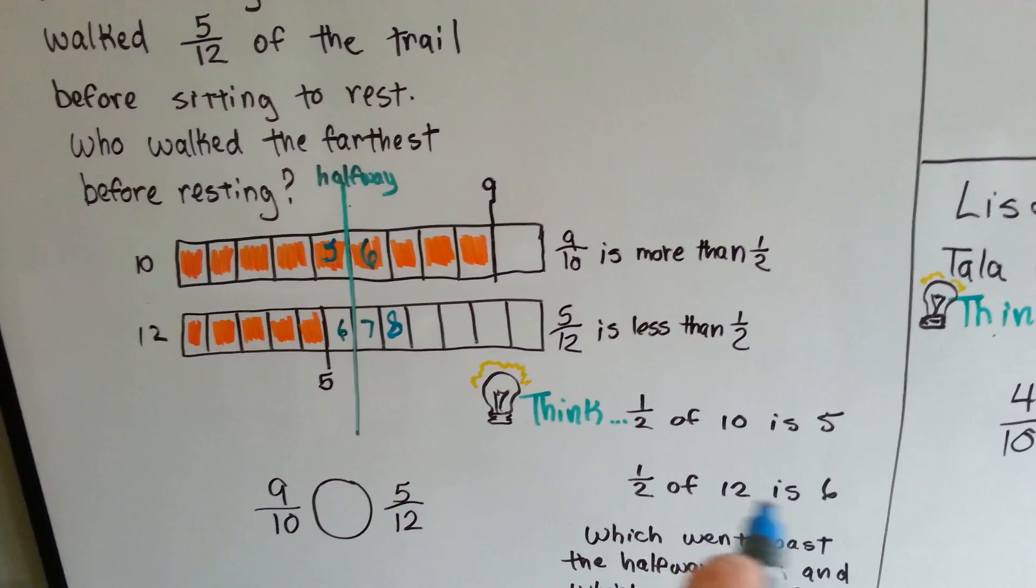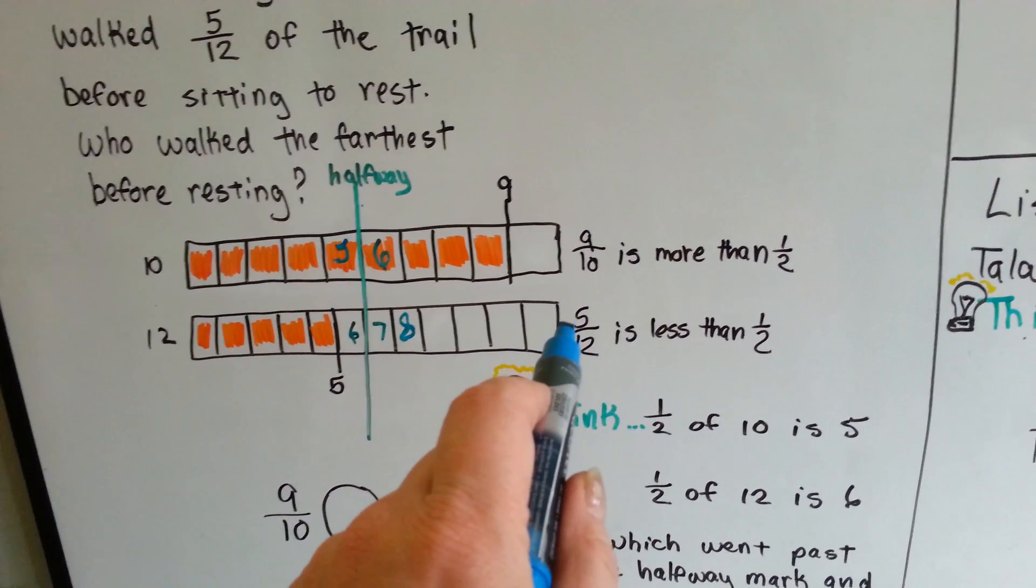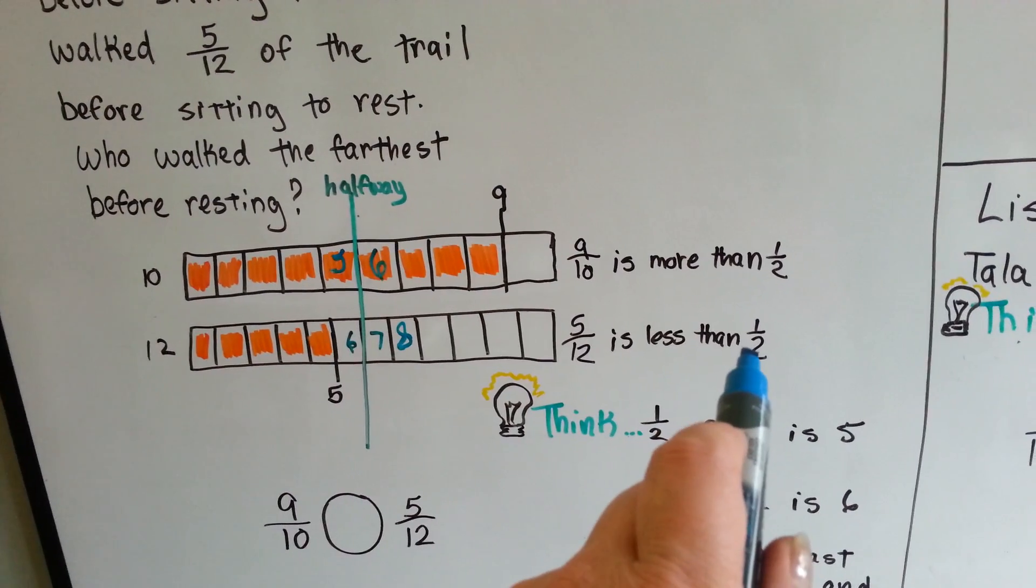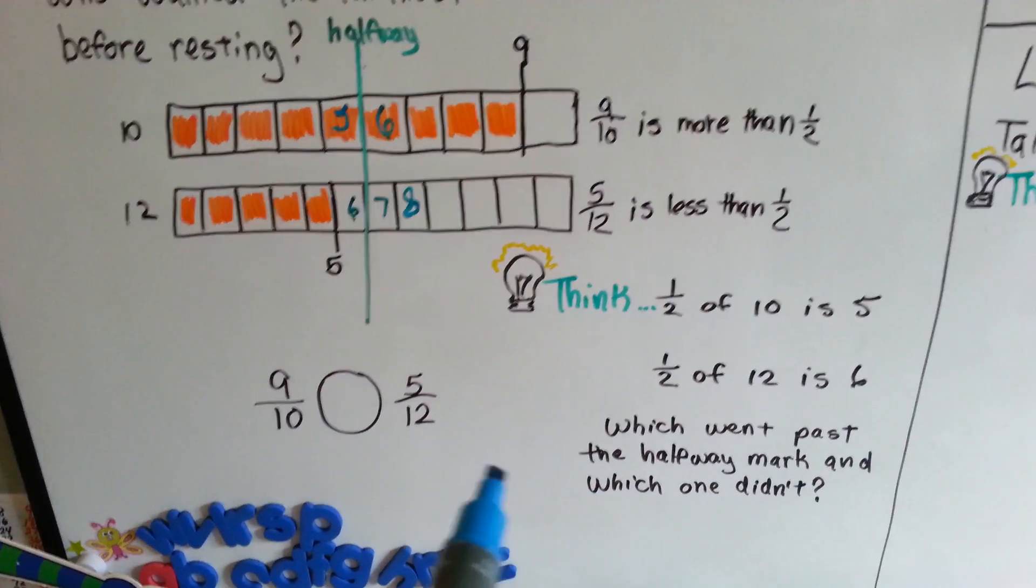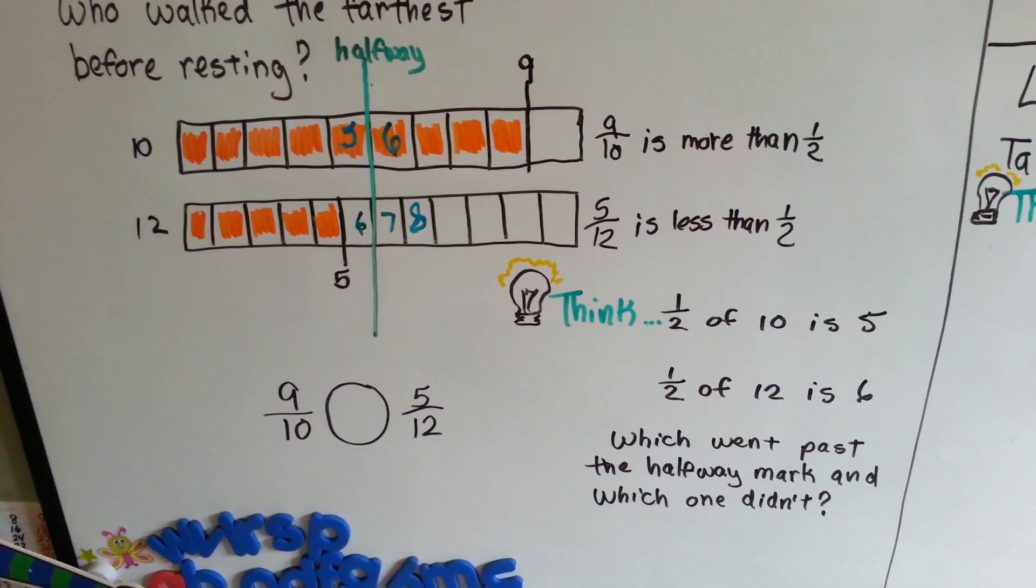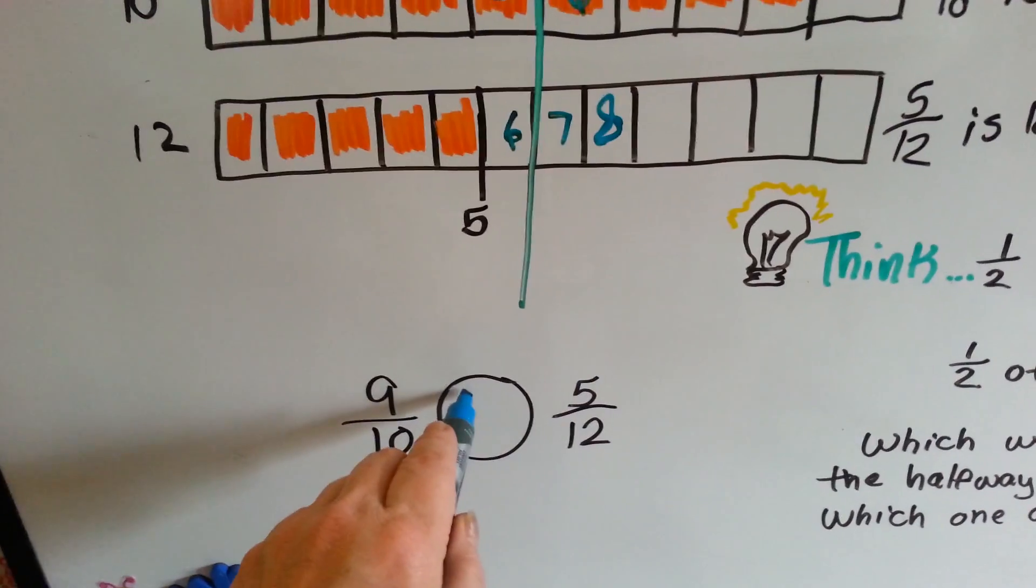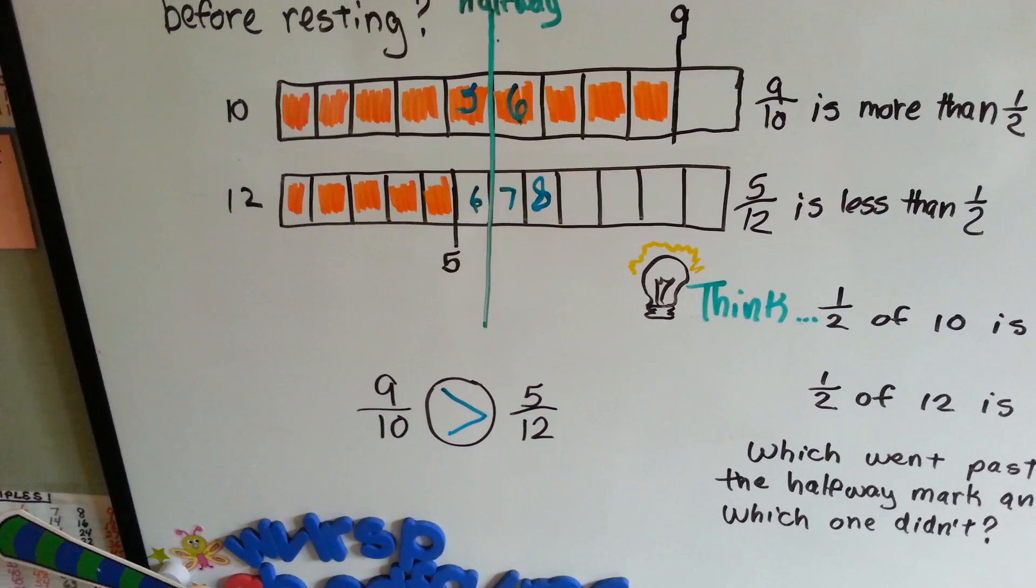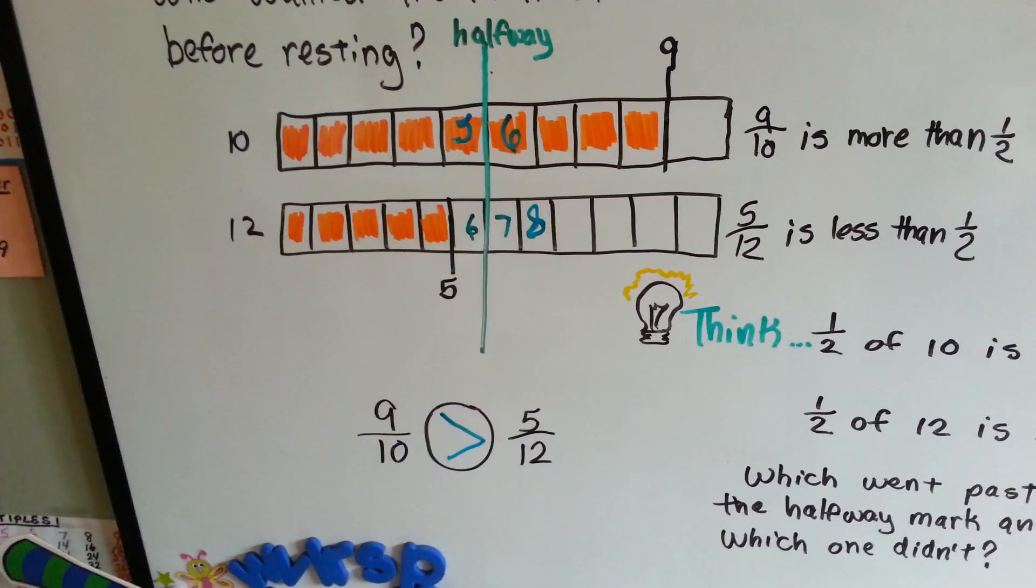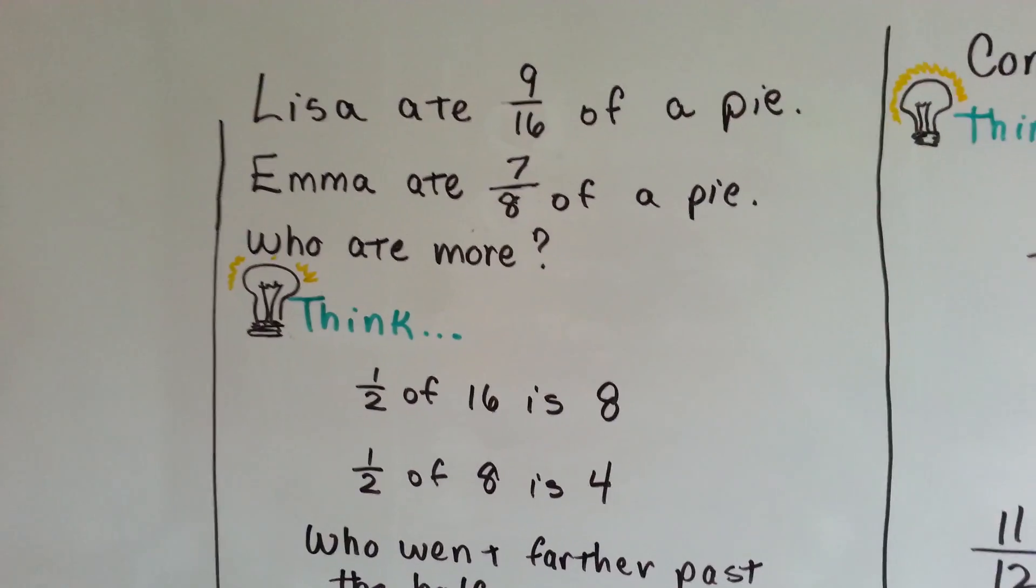Half of 12 is 6, and you haven't even touched it yet. You haven't even gotten to 6, so you're not even at the halfway part. See? You could probably do this in your head. Which went past the halfway mark, and which one didn't? 9 tenths is greater than 5 twelfths, because it went past the halfway mark, and that one didn't. So we know that one's bigger. We're going to keep using halfway marks to help us figure out which fraction is bigger.